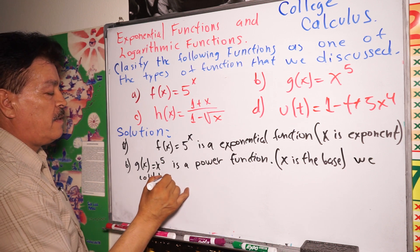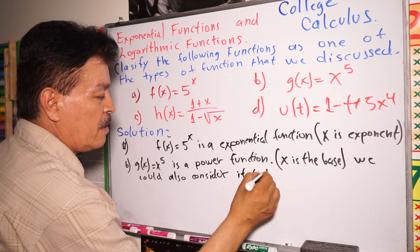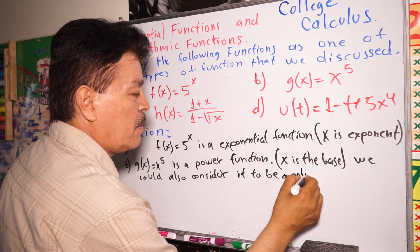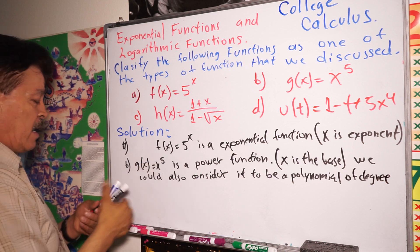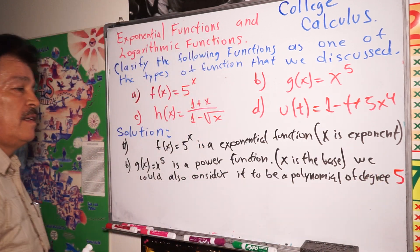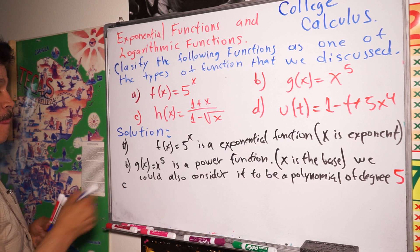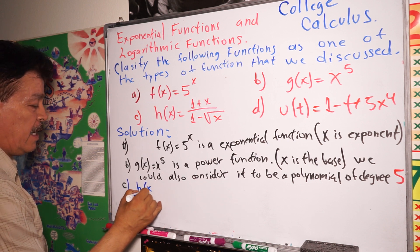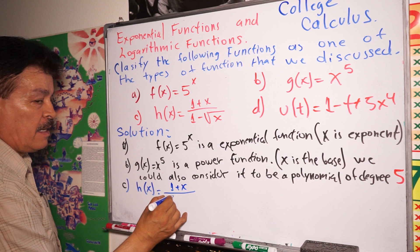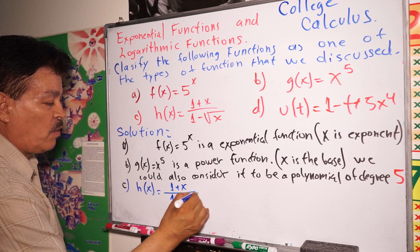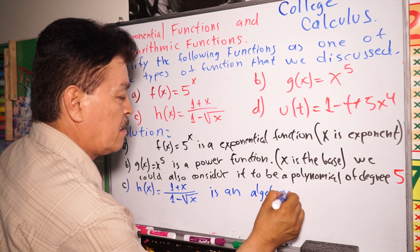We could also consider g(x) equals x to the fifth power to be a polynomial of degree five — fifth degree. Next, part c: h(x) equals (1 plus x) divided by the negative square root of x. This is an algebraic function.